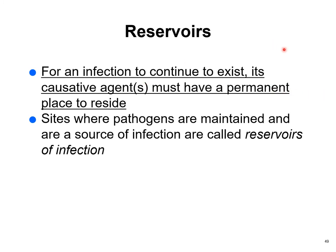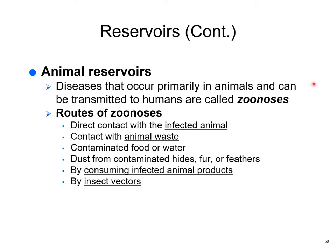Reservoirs for infection: for an infection to continue to exist it needs a place to stay — called a reservoir. Animal reservoirs are not uncommon. A disease that comes from animals and is transmitted to humans is called a zoonosis or zoonotic disease.